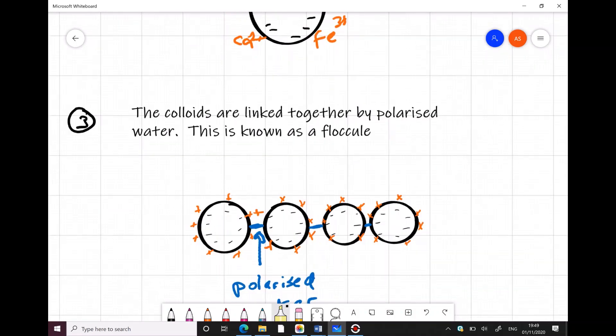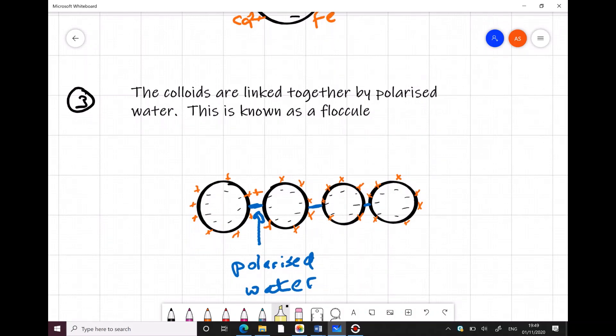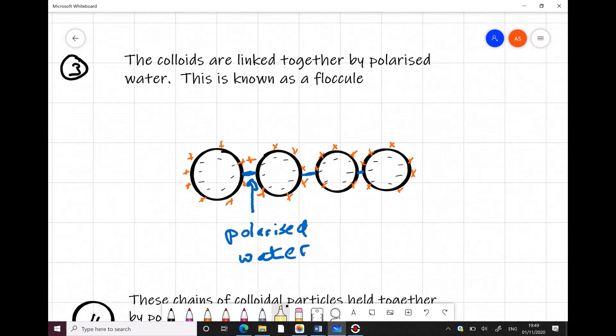The colloids then become linked together by polarised water and this is known as a floccule. So you've got chains of colloids and the cations adsorbed onto their surfaces that are attracted to each other and stuck together in chains. And this makes them bigger and makes them into a floccule.